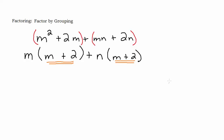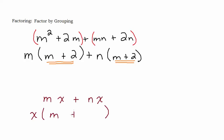The next step might be a little confusing so I'm going to build up to it. Let's say we have m times x plus n times x, and I wanted to take out a common factor. The common factor would be x, right? I could take that x out and I'd be left with m plus n. Everybody comfortable with that? Great.